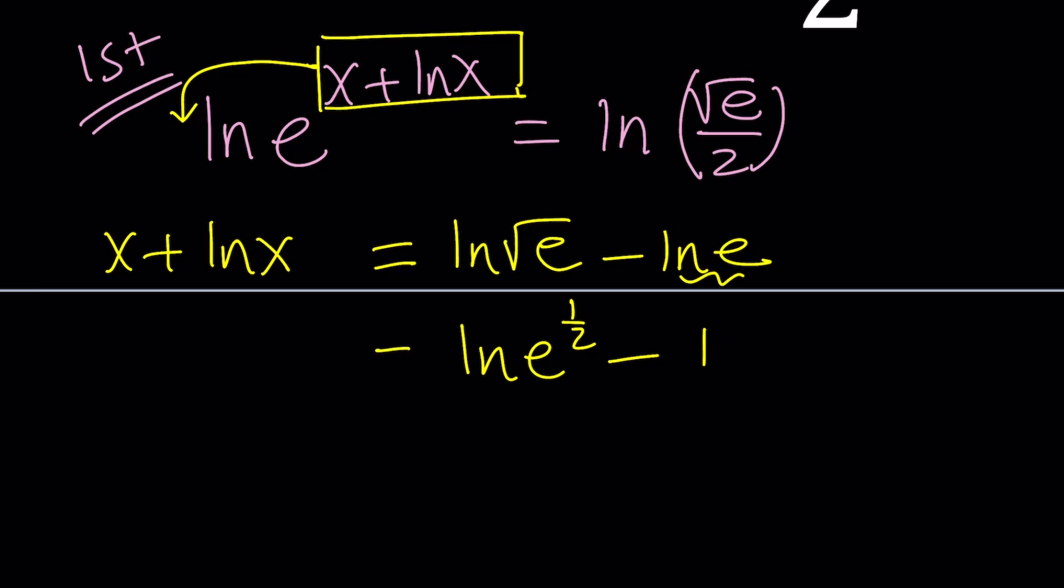Obviously it's not a product so we can get rid of it. It's just being subtracted and we still have x plus ln x on the left hand side. So we're going to try to manipulate the right hand side so that we can establish a one-to-one correspondence.